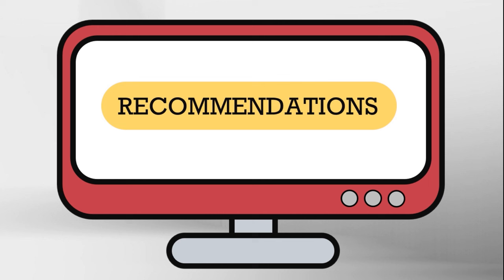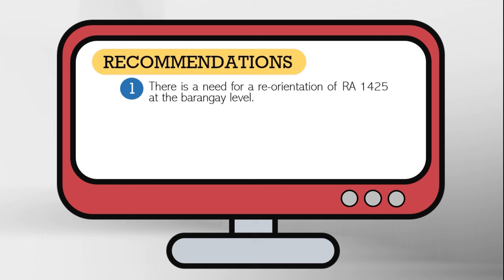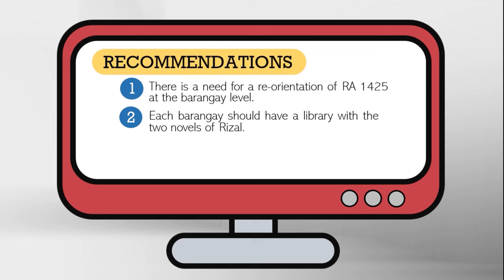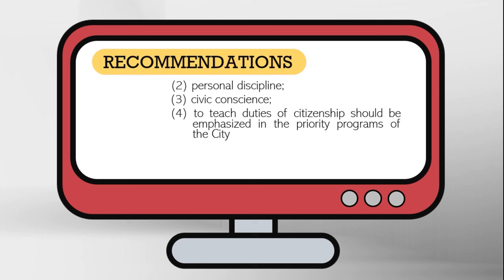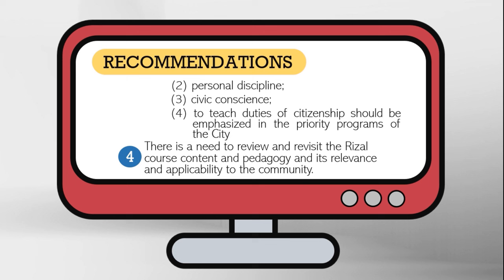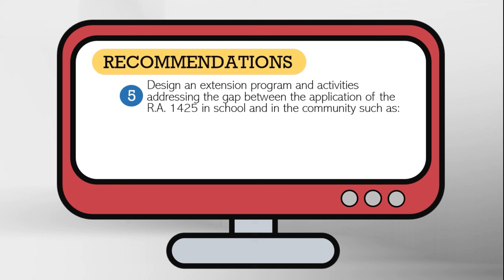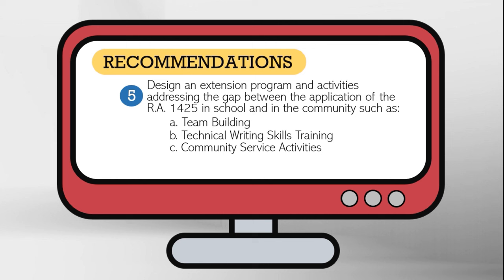Thus, the researchers recommended the following: First, there is a need for reorientation of RA 1425 at the barangay level. Second, each barangay should have a library with the two novels of Jose Rizal. Third, the objectives of RA 1425 — specifically developing moral character, personal discipline, civic conscience, and teaching the duties of citizenship — should be emphasized in the priority programs of the city. Fourth, there is a need to review and revisit the Rizal course content, pedagogy, and its relevance and applicability to the community. Fifth, design extension programs and activities addressing the gap between the application of RA 1425 in schools and in the community, such as team building, technical writing skills training, community service activities, and activities that promote moral development.